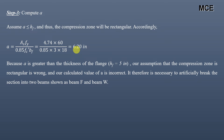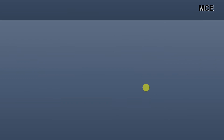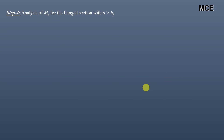Therefore, we break this T-beam into two beams: Beam F and Beam W. Beam F consists of only the flange portion, and Beam W consists of only the web portion. The area of steel for Beam F is Asf and for Beam W is Asw. We now analyze this flanged section for the case when the depth of the stress block is greater than the flange thickness.